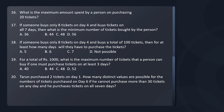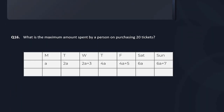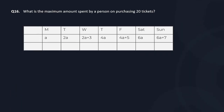Let's start with the first question. What is the maximum amount spent by a person on purchasing 20 tickets? If I want the amount to be maximum with 20 tickets, I will keep a smaller number of tickets on the earlier days and a higher number of tickets on the last day — because the prices keep increasing on a daily basis. So if I start with one ticket on Monday, I will purchase two tickets on Tuesday, and two plus three, five tickets on Wednesday.